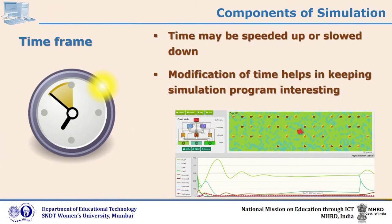In simulation, time may be speeded up or slowed down. If something is happening in a fraction of a second in a chemistry experiment, we can slow down the time and show learners exactly what happened in that fraction of a second. Modification of time helps in keeping the simulation interesting and, most importantly, effective for learning. You can even show the evolution of human beings from animals in a few seconds, which may have actually occurred over millions and millions of years.